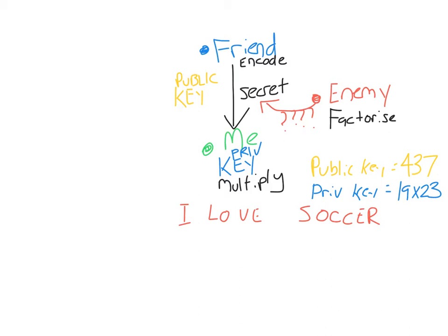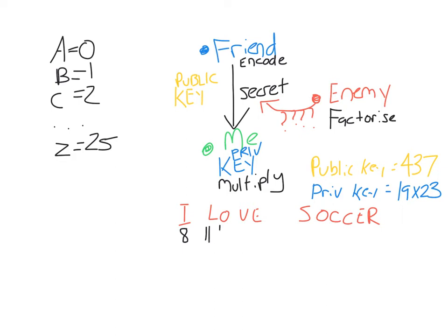We assign to each letter a number, going in order. A corresponds to 0, B corresponds to 1, C to 2, and so on, all the way down to Z which corresponds to 25. So I'm going to give each letter in this message a number: I corresponds to 8, L corresponds to 11, O to 14, and so on.